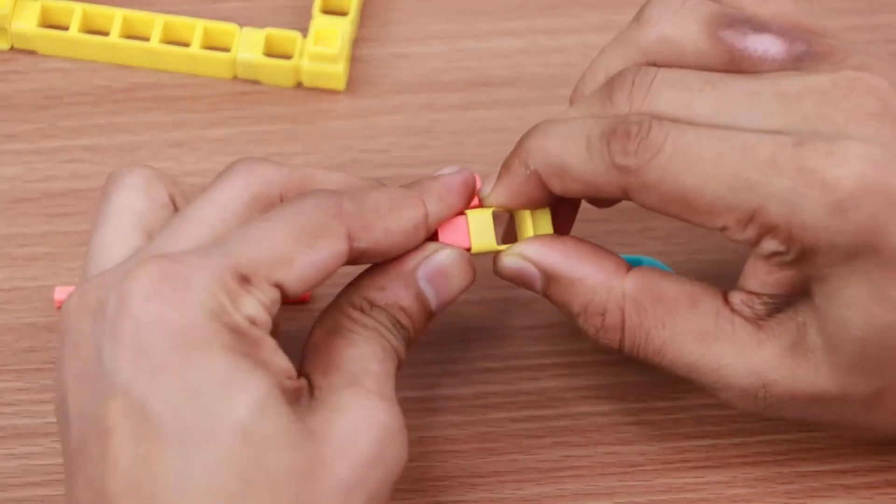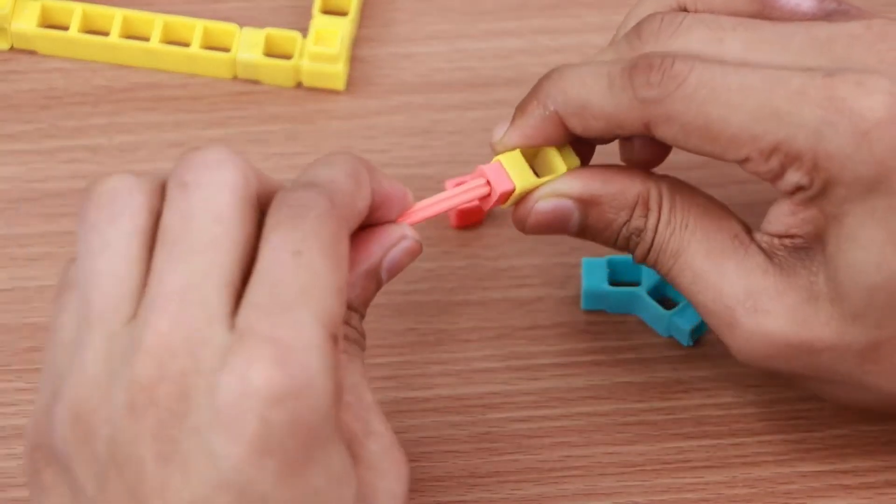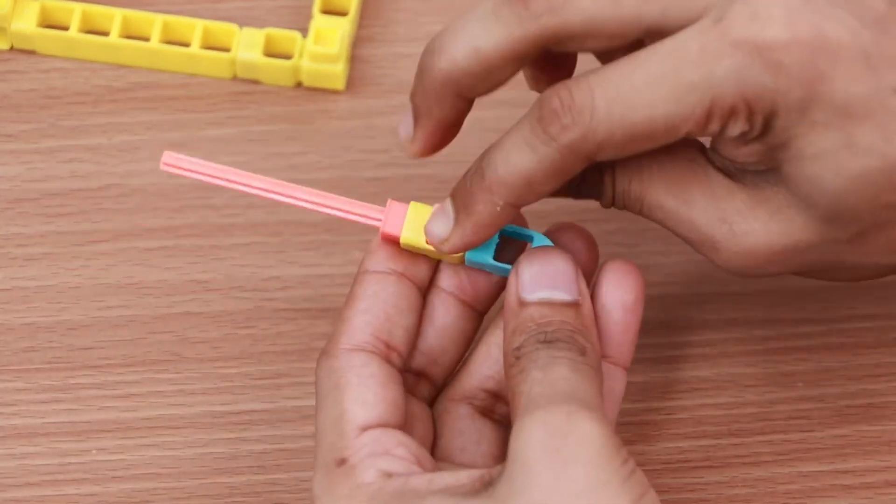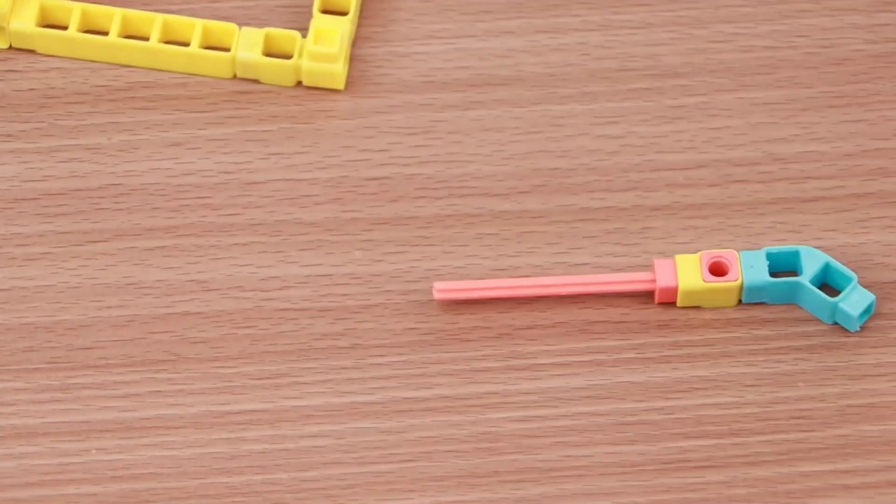Let's create the drumsticks. Take one two-hole elbow, one one-hole beam, one B.O. shaft, one male axle coupler and one 90 mm axle. Join them together as shown.